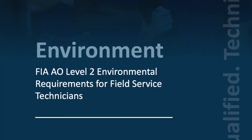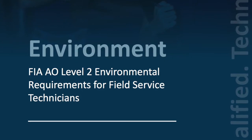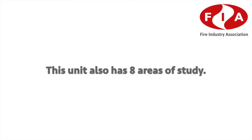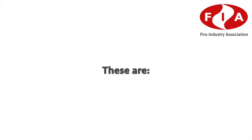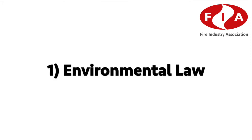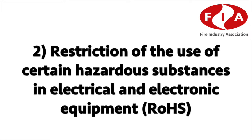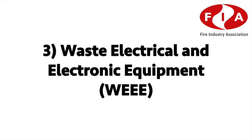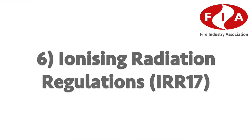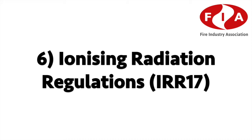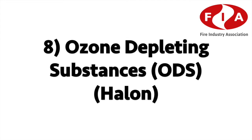Now let's move on and look at the Environmental Unit. This unit also has eight areas of study. These are: 1. Environmental Law; 2. Restriction of the use of certain hazardous substances in electrical and electronic equipment; 3. Waste electrical and electronic equipment; 4. Waste management; 5. Energy consumption; 6. Ionising radiation regulations; 7. F-gas; and 8. Ozone depleting substances.